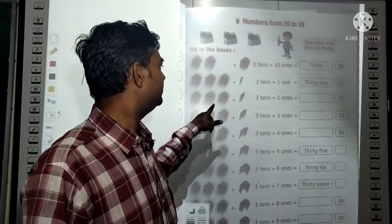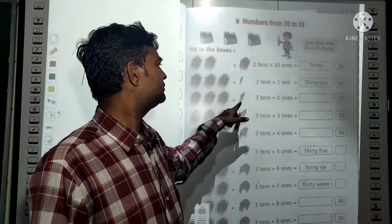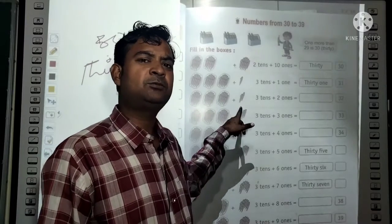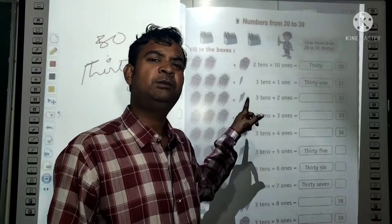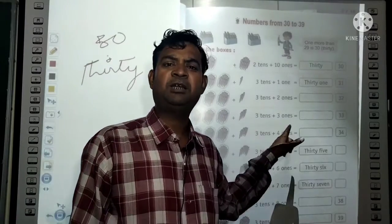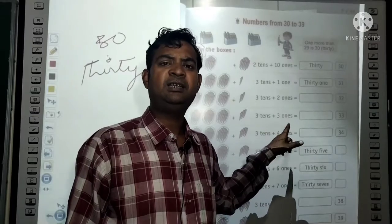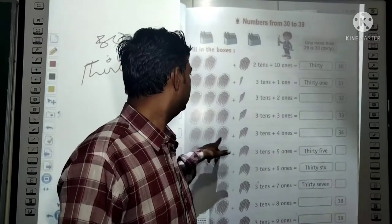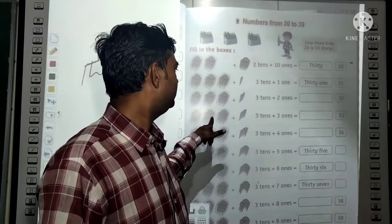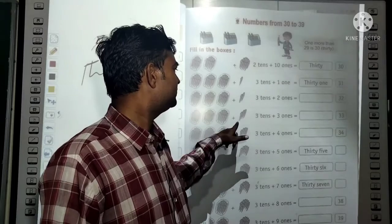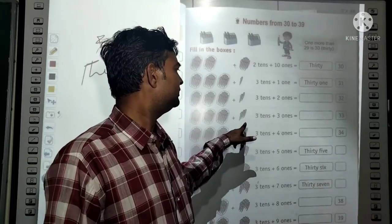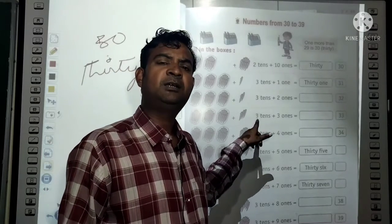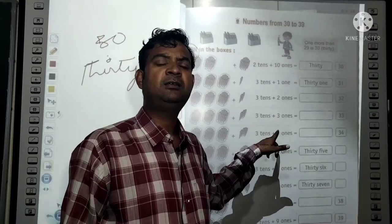3 tens + 2 ones: 3 tens means 30, plus 2 equals 32. Spelling of 32: T-H-I-R-T-Y T-W-O. Then 3 tens + 3 ones means 30 + 3 = 33. Spelling of 33: T-H-I-R-T-Y T-H-R-E-E.